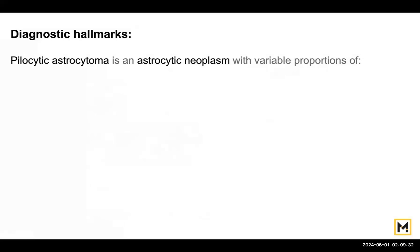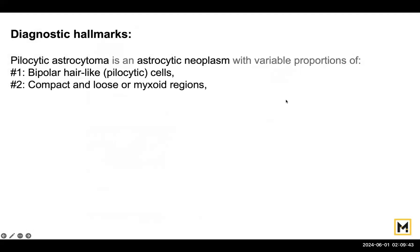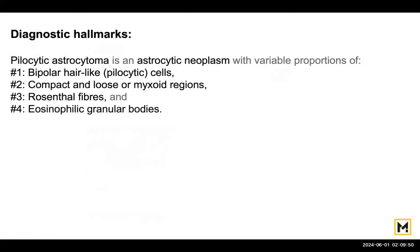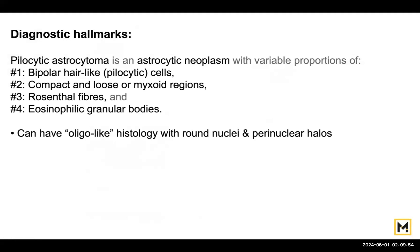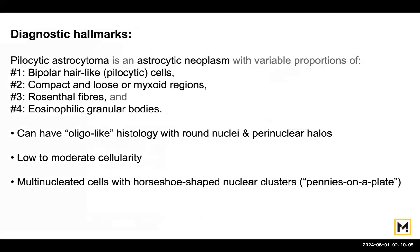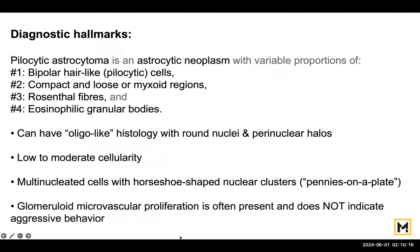Let us summarize pilocytic astrocytoma. These are the diagnostic hallmarks: it's an astrocytic neoplasm with variable proportions of bipolar hair-like pilocytic cells, compact and loose or myxoid areas, Rosenthal fibers, and eosinophilic granular bodies. Some tumors can have oligodendrocyte-like histology with round nuclei and perinuclear halos. The cellularity is typically low to moderate. There are multinucleated cells with horseshoe-shaped nuclear clusters called pennies on a plate. Glomeruloid microvascular proliferation can be present and does not indicate aggressive behavior.